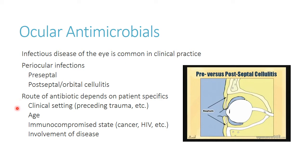Whether the patient is immunocompromised and how involved the disease is will lead you to choosing either a topical medication applied directly to the eye, or something more systemic that can treat surrounding areas. This may mean IV or PO therapy even when the infection is near the eye. Preceding trauma might also change your antibiotic selection because you're introducing foreign bacteria — anaerobes, fungi, all kinds of things from those wounds — so antibiotic selection should be based on patient history.